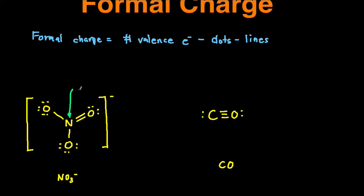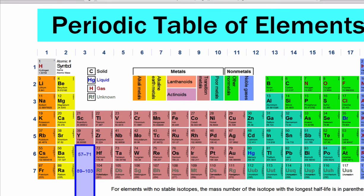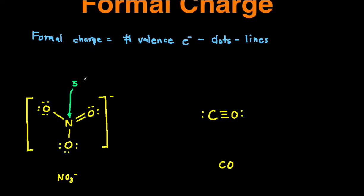To calculate the formal charge of each of these elements we just follow this formula. Let's start with nitrogen. For nitrogen the number of valence electrons is five — nitrogen is in the fifth column of the periodic table. Minus the number of dots: around this nitrogen you see there are no dots, so zero. Then minus the number of lines, which is the number of bonds: one, two, three, four around the nitrogen. We do the math and we get positive one. So the formal charge of the nitrogen is positive one.